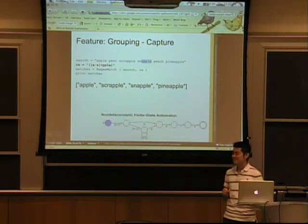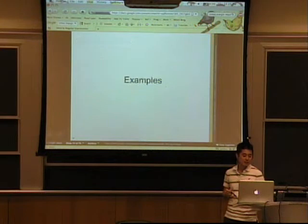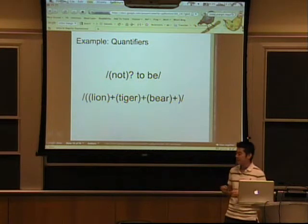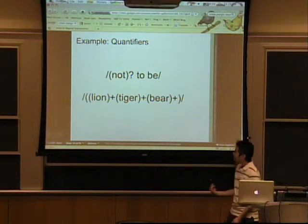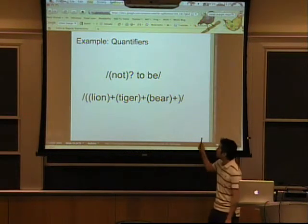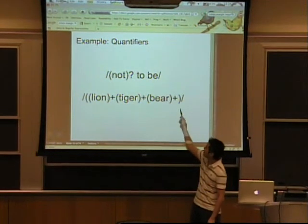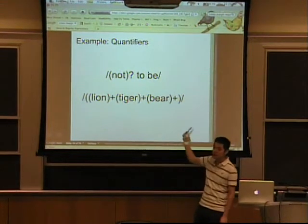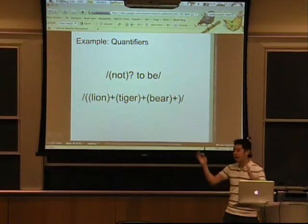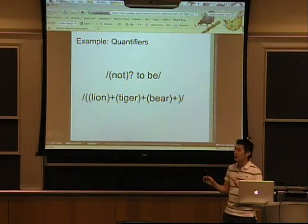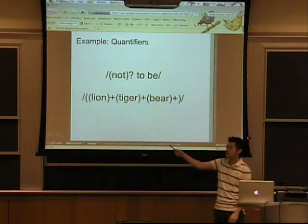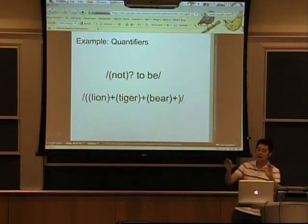Any other questions? Feel free to stop me as I continue. So now I'll go over some simple examples — these should clarify things if the previous slides haven't. We have a few regular expressions here with groups and quantifiers. These slashes are just what I use to delimit regular expressions — the start and end — because in certain languages like JavaScript, Ruby, maybe Python, you can put a regular expression directly in the code and it'll wrap it in an object.